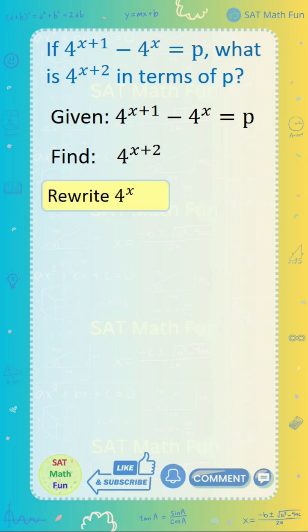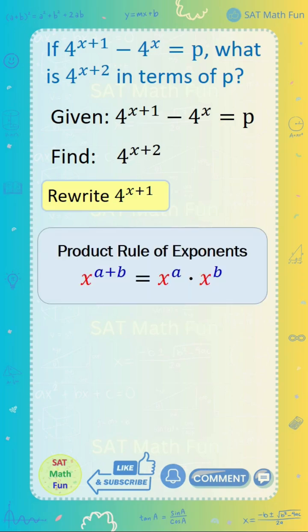Alright, let's rewrite the expression 4 to the power of x plus 1. The product rule of exponents says that if you multiply two terms with the same bases, you can simply add the exponents.